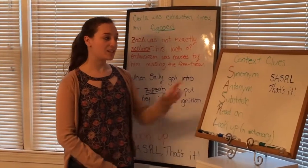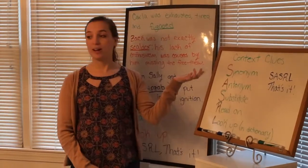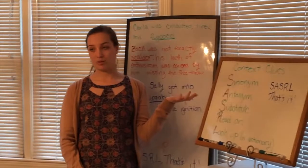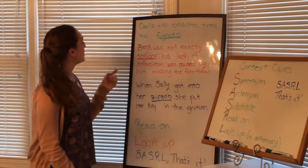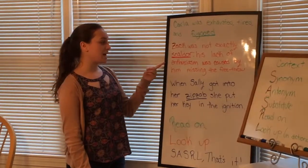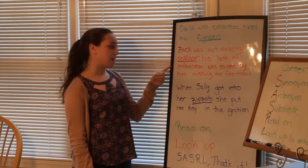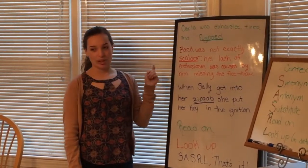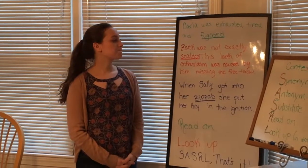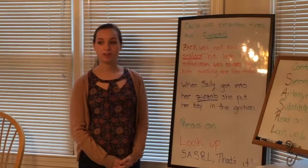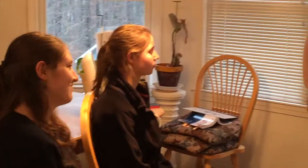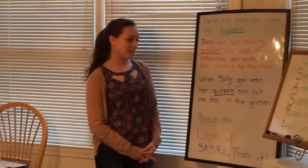So if your sentence doesn't have a synonym in it, it could have an antonym in it, which is something that is the opposite of the word that you don't know. So in this sentence, Zach was not exactly scaldor. His lack of enthusiasm was caused by him missing the free throw. Julia, how would you figure out what scaldor means? So he was not exactly scaldor. Right. So it was lack of enthusiasm, so he was unenthusiastic. Unenthusiastic? That's right. That is exactly right.